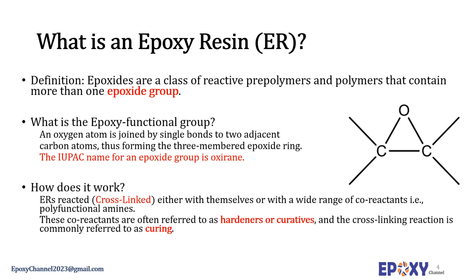What is an epoxy? Epoxides are a class of reactive pre-polymers and polymers that contain more than one epoxide group. An epoxide group is an oxygen atom joined by a single bond to two adjacent carbon atoms, forming a three-membered epoxide ring. The IUPAC name for an epoxide group is oxirane. A compound containing the epoxide functional group can be called an epoxy, epoxide, oxirane, or etoxylane. Simple epoxides are often referred to as oxides.